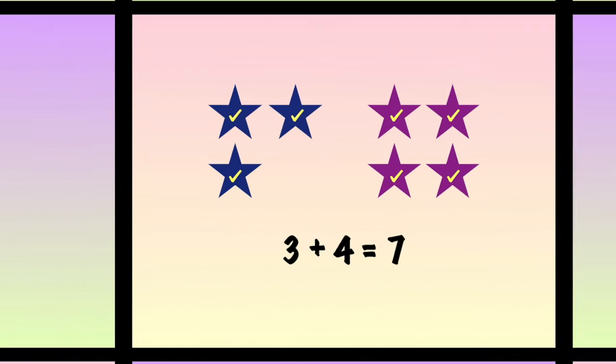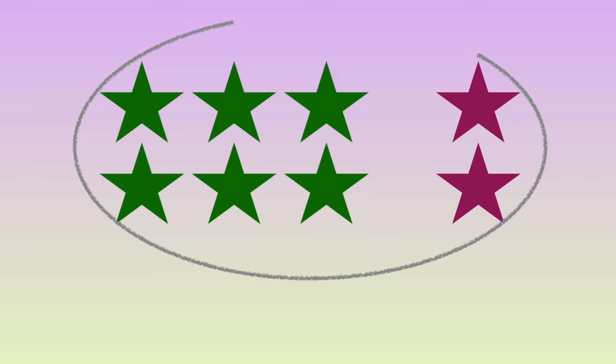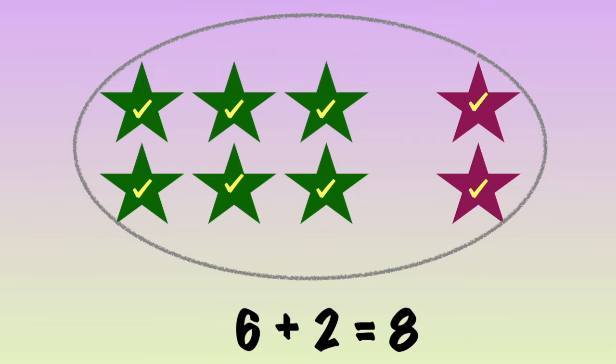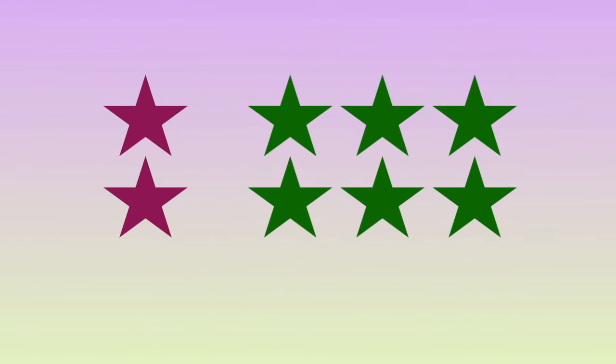Let's try one more. There are six green stars and two purple stars. How many stars are there in all? Let's count: one, two, three, four, five, six, seven, eight. Six plus two equals eight. What happens if I swap my stars?